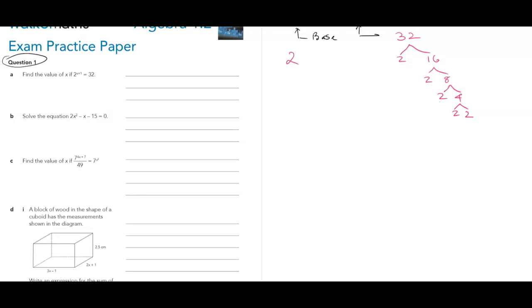That gives you 2 to the power x plus 1 equals 2 to the power 5. Since the bases are same, I can write x plus 1 should be equal to 5. Then solve it. That will give you x equals 5 minus 1. So x equals 4. That will probably give you just an achieved.